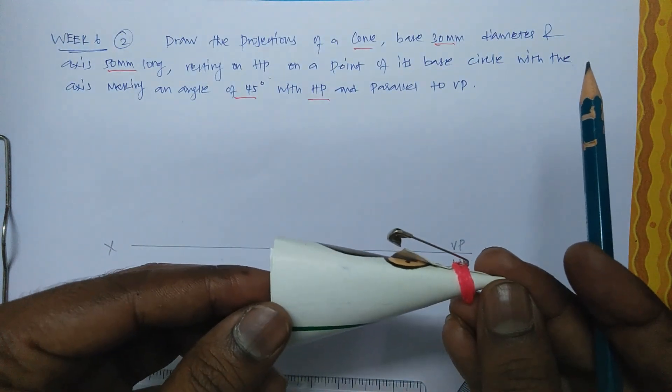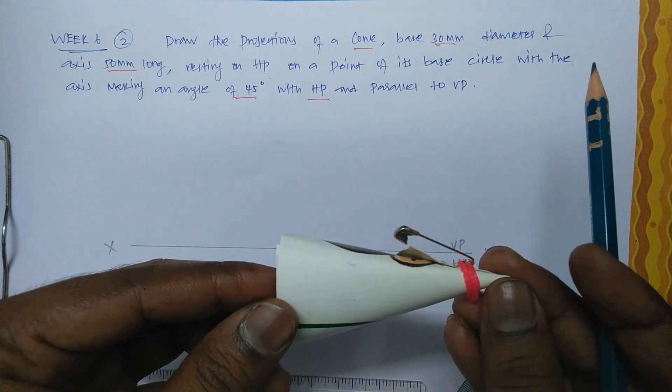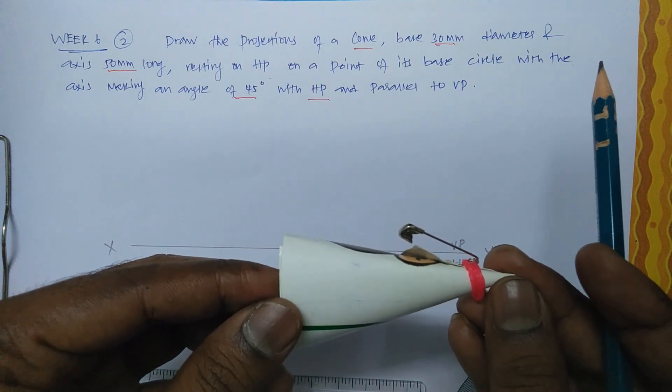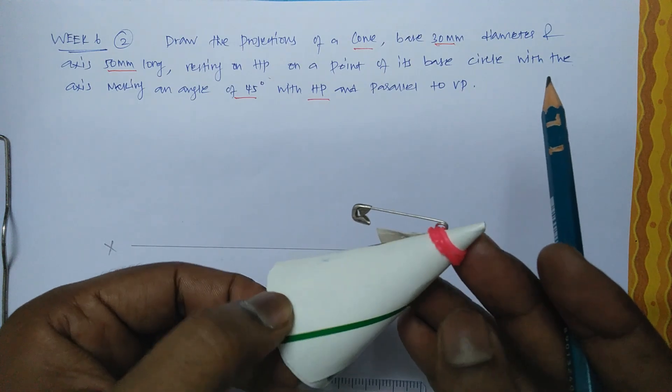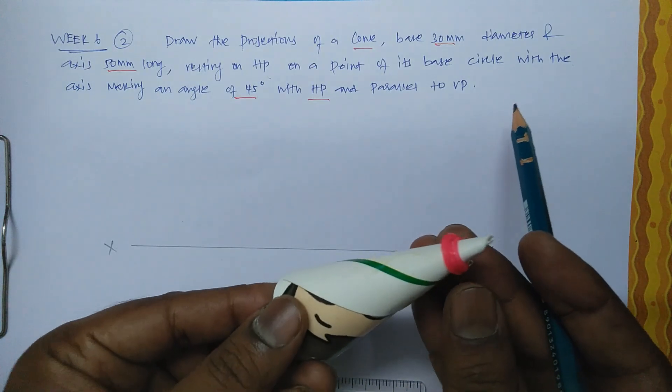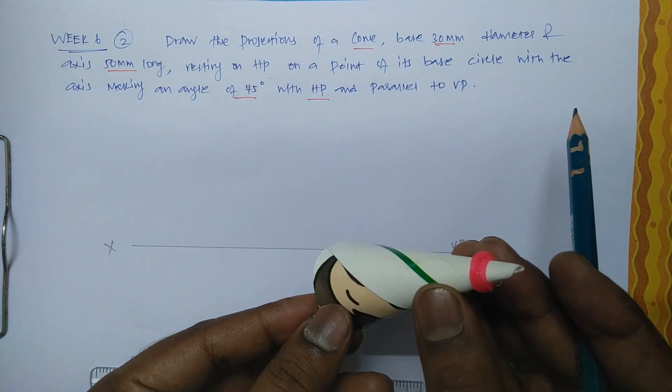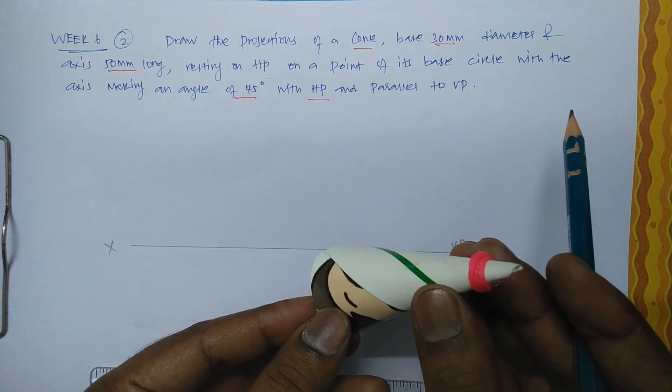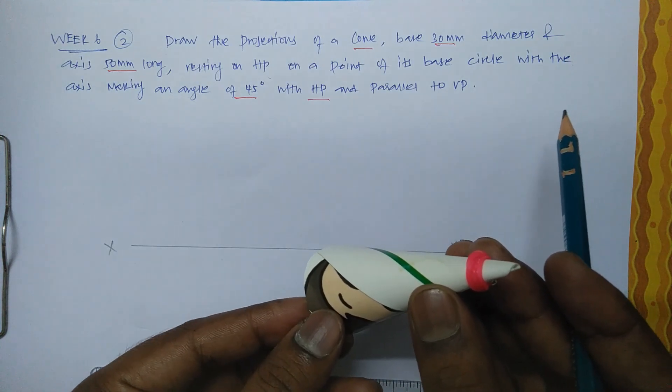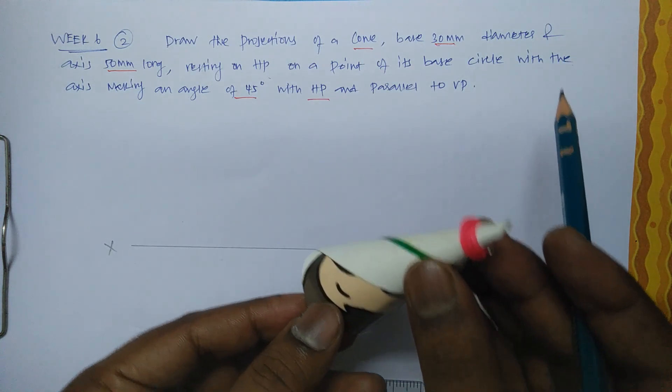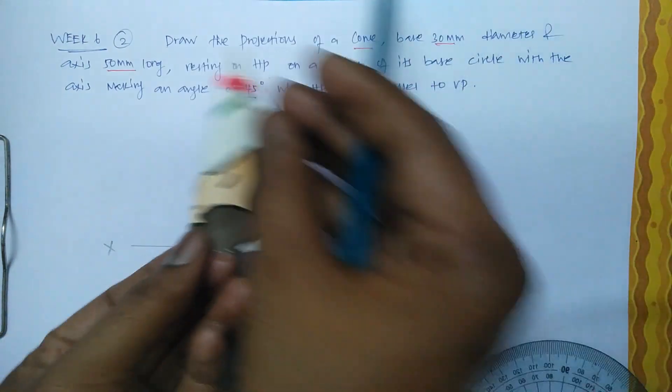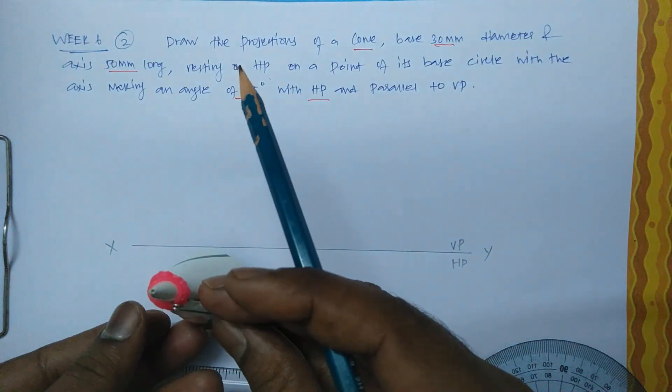If you are seeing from top, if it is on HP it will be like this, or if it is slightly tilted. The apex is at 45 degrees. This one is considered as the final top view, this may be final front view, this may be simple position.